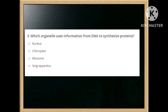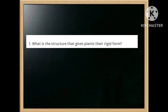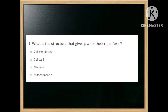Which organelle uses information from DNA to synthesize proteins? Options are: nucleus, chloroplast, ribosome, Golgi apparatus. The answer is: ribosome. What is the structure that gives plants their rigid form? Options are: cell membrane, cell wall, nucleus, mitochondrion. The answer is: cell wall.